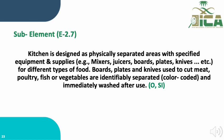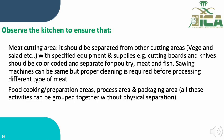Sub-element E.2.7 states that the kitchen is designed as a physically separated area with specified equipment and supplies — such as mixing utensils, boards, plates, and knives — for different types of food. Boards, plates, and knives used for meat, poultry, fish, or vegetables must be identifiable, separated by color-coding, and immediately washed after use. This sub-element is evaluated through observation and staff interview. The meat cutting area should be separated from other areas, with color-coded cutting boards and knives to avoid errors.